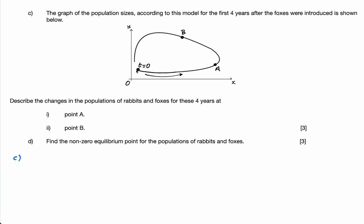t starts and x is rabbits and y is foxes. At the start, the foxes actually decrease a little bit but not too much, and the rabbits are continuing to increase — breeding like rabbits — increasing a lot. Once it gets to a certain point, the foxes start increasing too, going up the y-axis, and then there are a lot of foxes and they start to eat the rabbits, so the rabbits start dying.